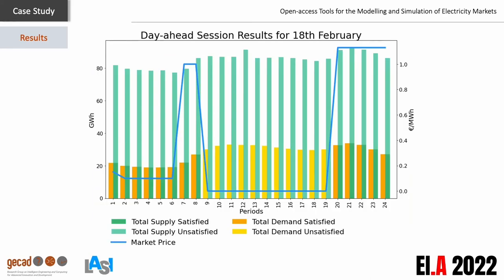Looking at the simulation results from the market operator's point of view, these are the overall session results for the day-ahead session of 17 February 2019, a randomly selected day. It must be noticed that being a day-ahead session, the simulation is actually determining the market clearing for the next day, that is 18 February. From the chart, the total demand and supply submitted per day can be observed. The different color tones identify the satisfied (dark) and unsatisfied (light) demand and supply in orange and green respectively. The blue line represents the market price set for each trading period. A closer look at periods 9 until 19 suggests no negotiation in those periods, but there was, as will be shown next. Such has to do with granularity, since in this chart the energy unit is GWh and the traded energy is not enough to be seen at this dimension.